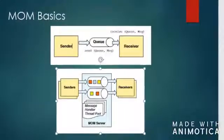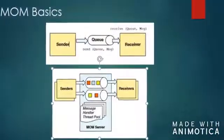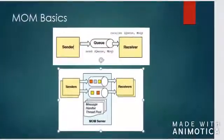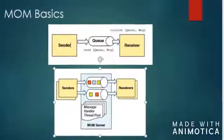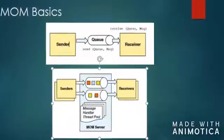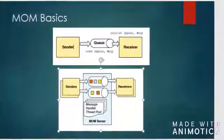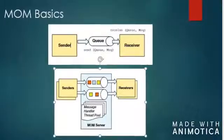A MOM server has a number of basic responsibilities. First, it must accept a message from the sending application and send an acknowledgement that the message has been received. Next, it must place the message at the end of the queue that was specified by the sender. A sender may send many messages to a queue before any receivers remove them.